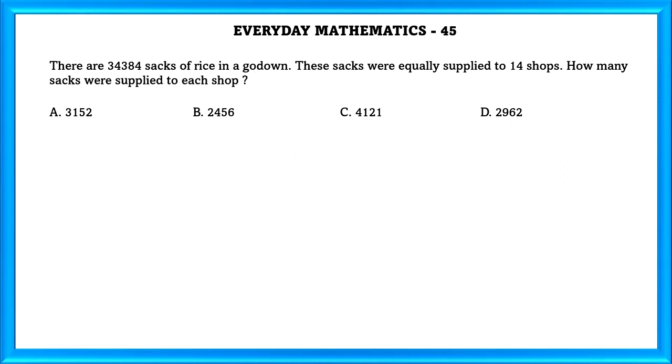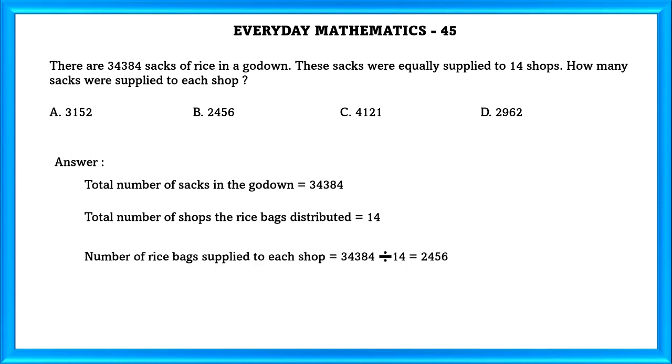Everyday Mathematics Question Number 45: There are 34,384 sacks of rice in a go-down. These sacks were equally supplied to 14 shops. How many sacks were supplied to each shop? Total number of sacks in the go-down: 34,384. Total number of shops the rice bags distributed equals 14. Number of rice bags supplied to each shop equals 34,384 divided by 14 which equals 2,456. That is B.